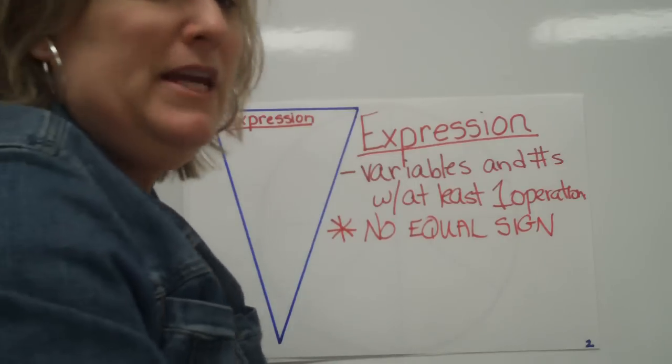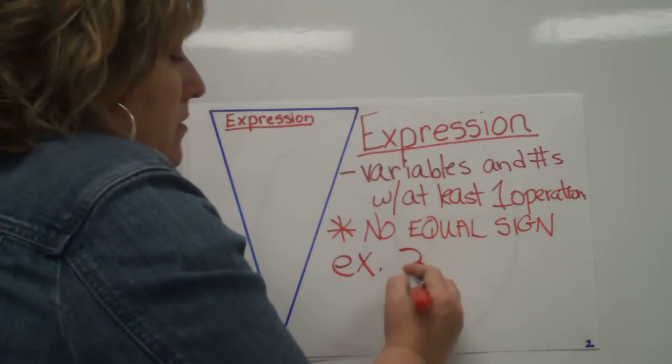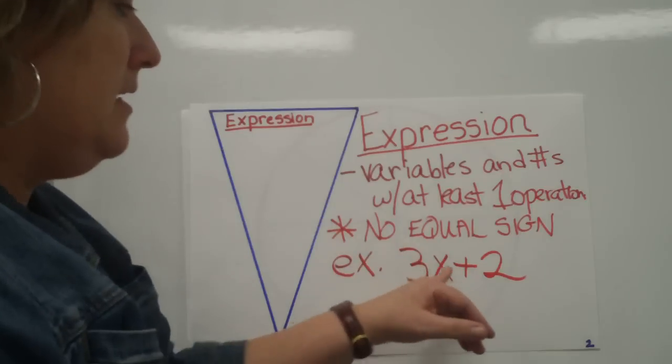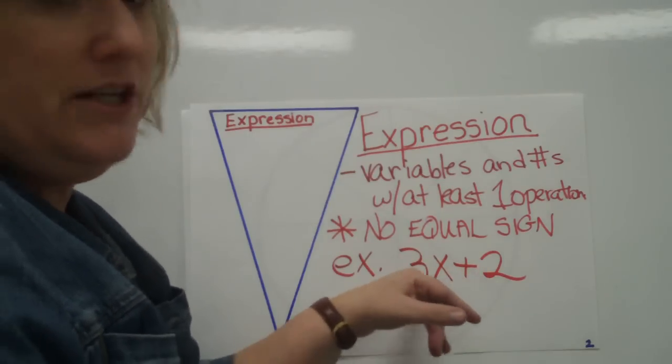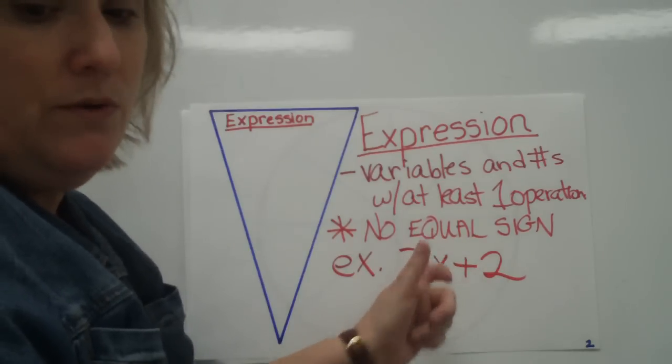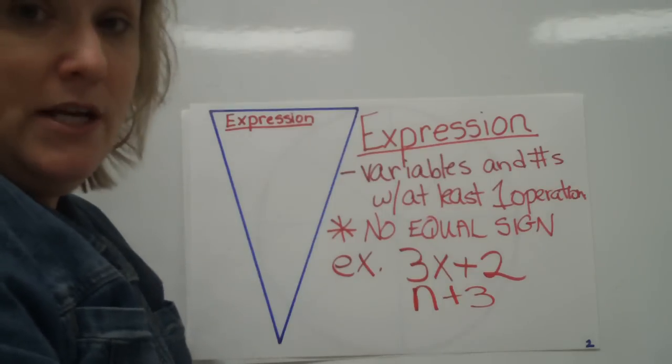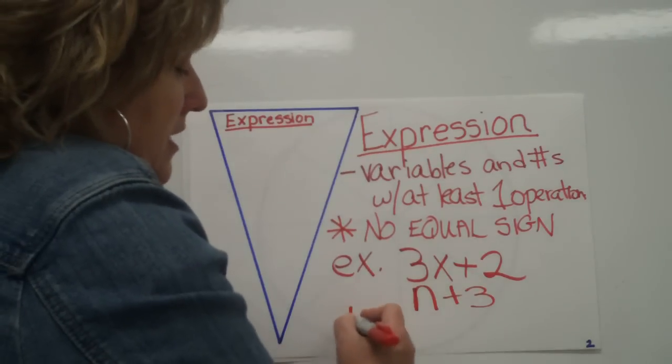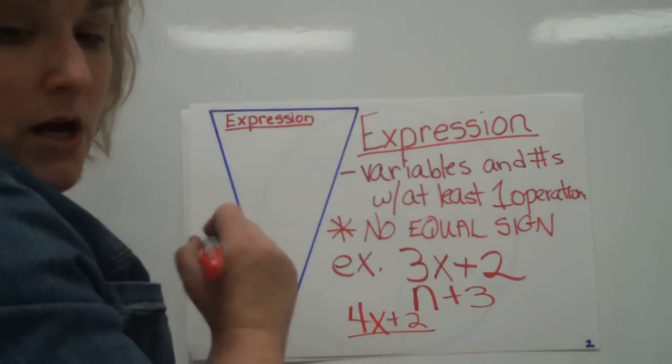Let me give you an example. An example would be 3x plus 2. You notice it has variables, it has numbers, it has an operation - actually there's two operations here, the addition and the multiplication. It has a combination of all those things but there is no equal sign. Another example would be n plus 3 - has a variable and a number and operation but no equal sign. And another one that you might not be used to seeing is 4x plus 2 over 3 minus x.